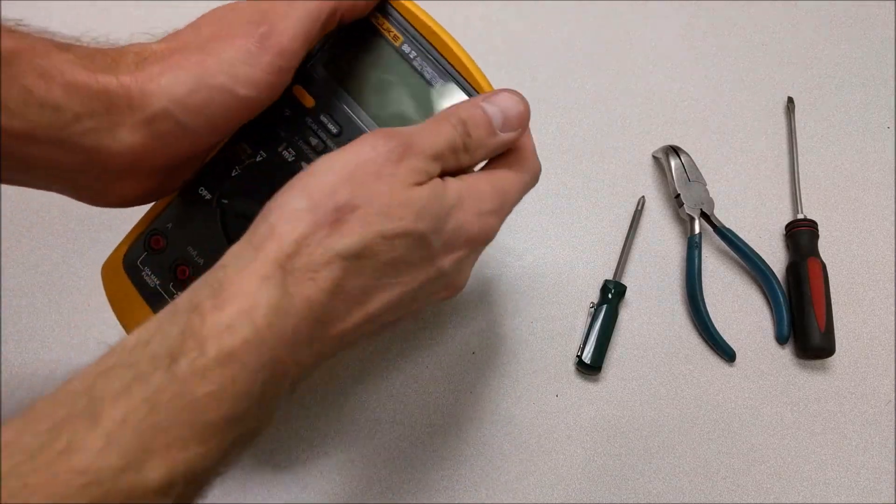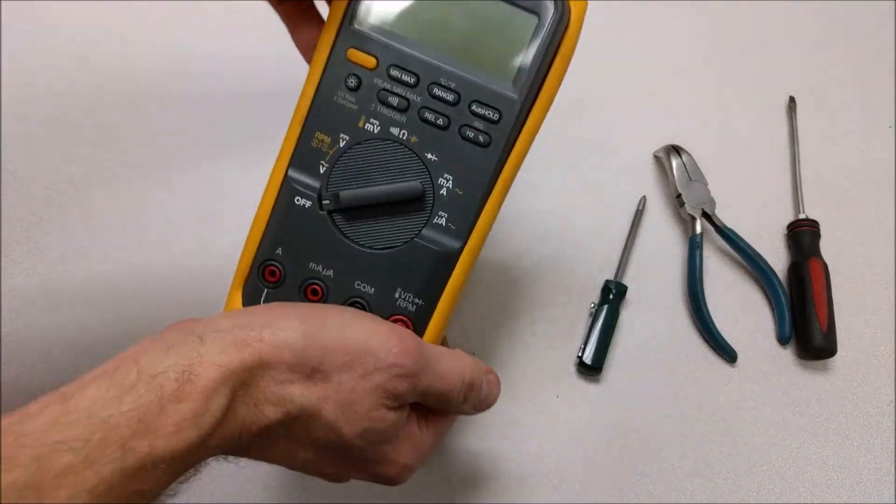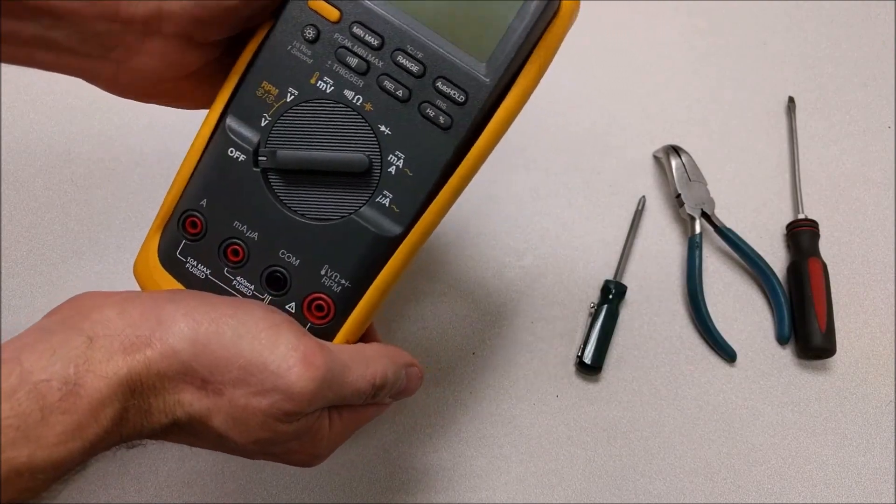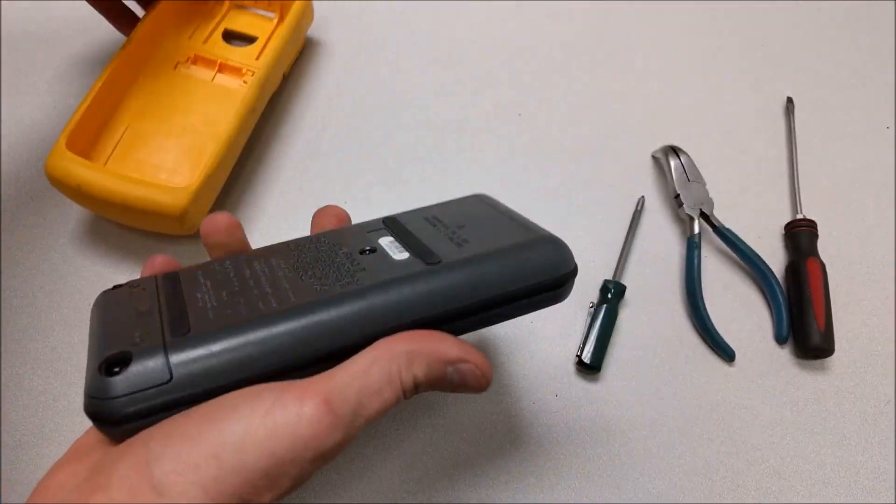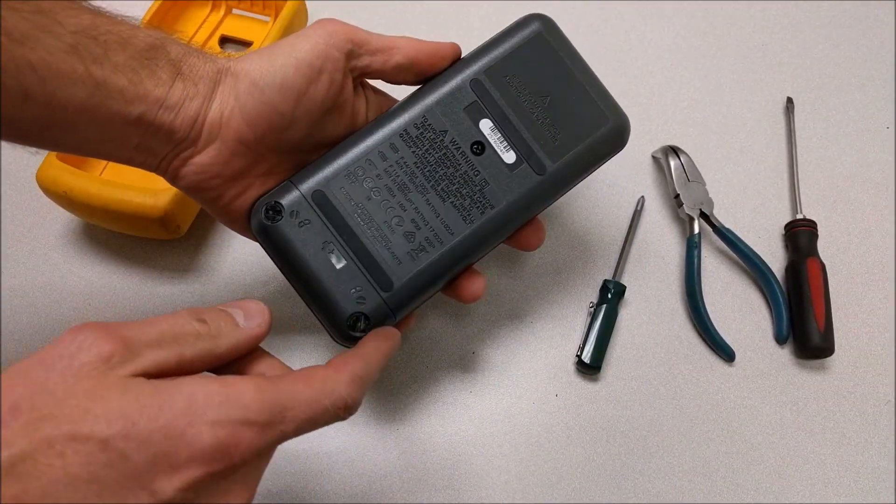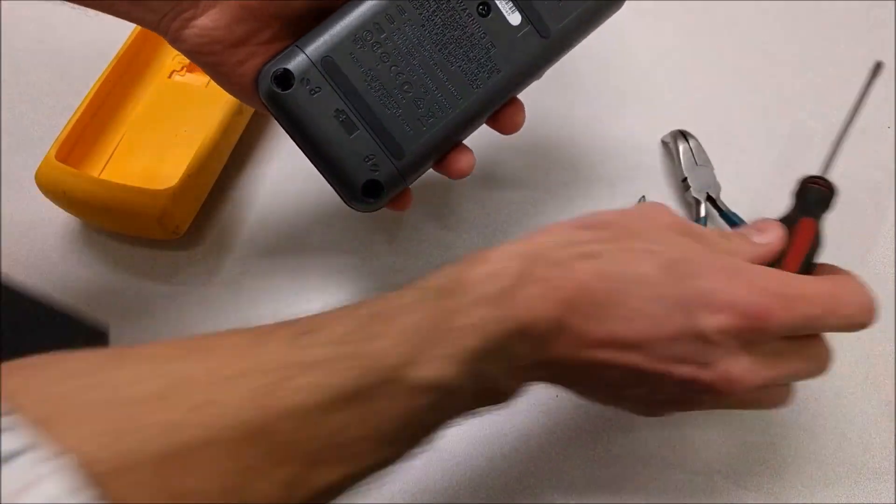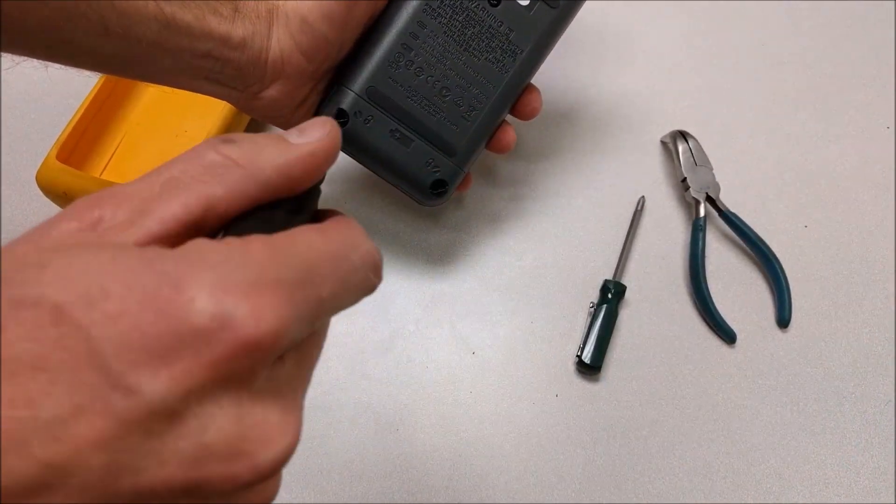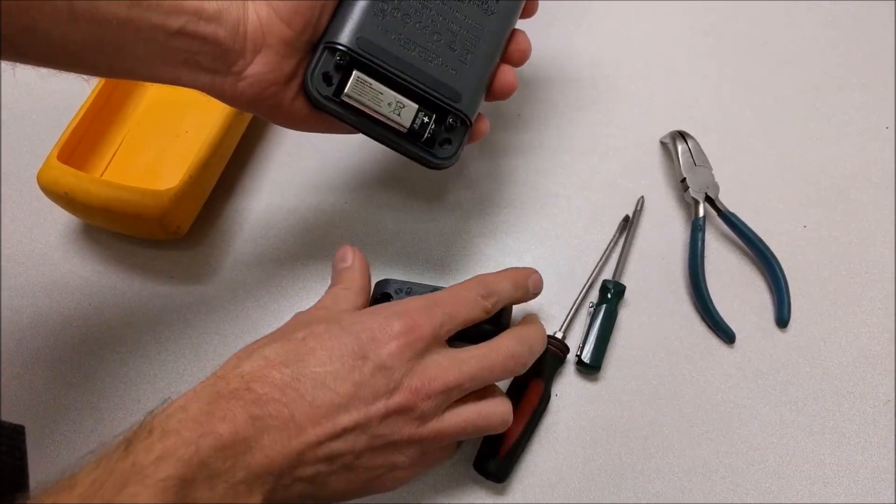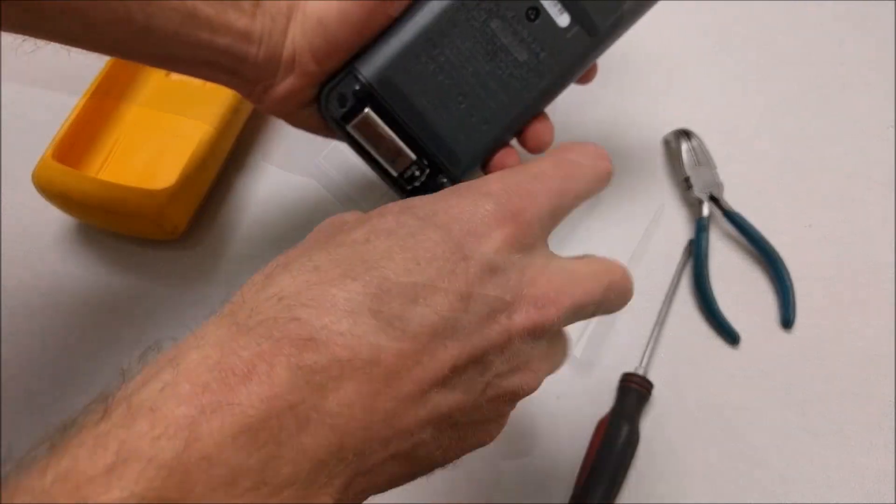On this Fluke meter, we basically have to pull the silicon boot off of it. And on the back, we'll see a screw, and then I have to take off the battery case here. So I'll remove the battery cover. You'll see there are two screws under here.